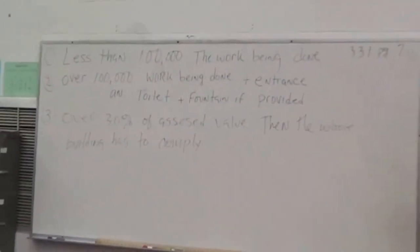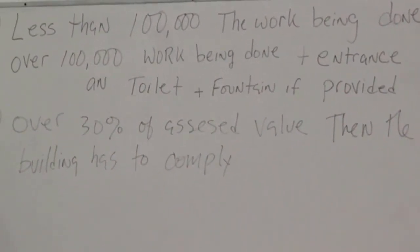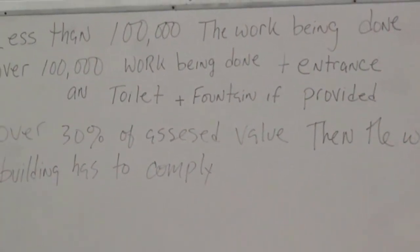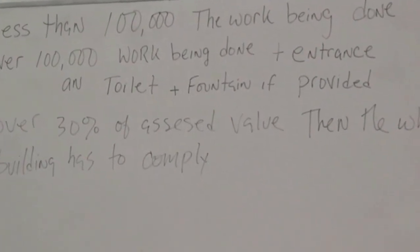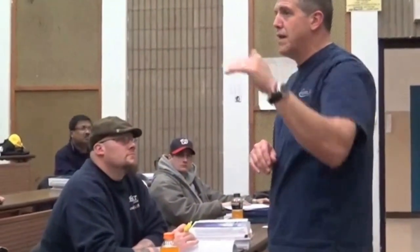The second piece of the formula is: over a hundred thousand dollars, the work being done plus an entrance. So let's say the tele-stations cost a hundred and twenty thousand dollars. Once it goes to a hundred and twenty thousand, you have to fix the three steps going in — so the work being done has to comply, plus the steps have to comply.